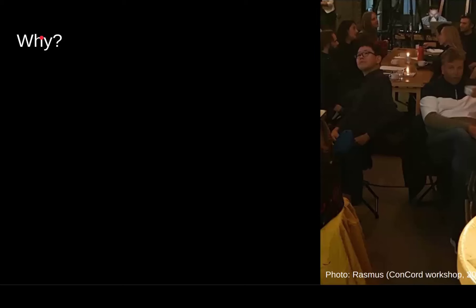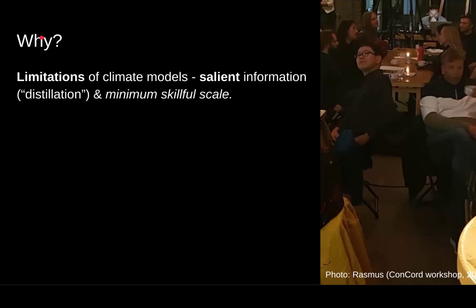We know that global climate models, which are the main tool for predicting what is happening in the future, are designed to reproduce large-scale features in the climate system. They are representative of the large scale, but they're not able to provide details needed for the local scales and local climates. Because of these limitations, and their minimum spatial scale, we want to grab the salient information and make use of that — we call that distillation.